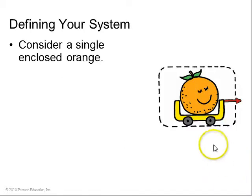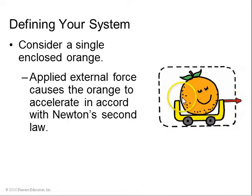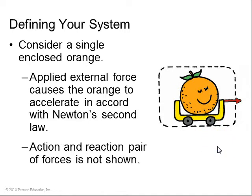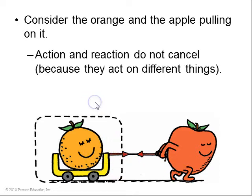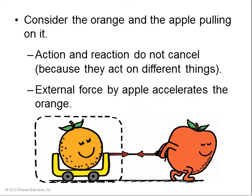So it's important to define your system. Consider a single enclosed orange, and there's an external force causing the orange to accelerate in accordance with Newton's second law. There's no action-reaction pairs shown in this system. However, what's really going on is this apple is pulling the orange. So there is an action-reaction pair. The apple pulls the orange, the orange pulls the apple. But they don't cancel because they're acting on different things. If you consider your system to be the orange, there's an external force pulling it along, and that's why it accelerates.